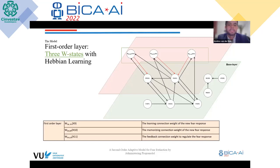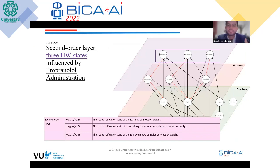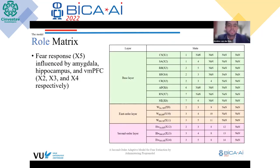The first-order layer contains three W-states, or omega states, that have the Hebbian learning combination function to facilitate learning and change the hippocampal and ventral medial prefrontal cortex states. The second-order layer activates learning — the first layer is responsible for learning, whereas the second layer activates it. Looking at the role matrix, the second-order layer is affected by the norepinephrine state (state 8), the first-order layer is activated by the second-order layer, and that leads to the modulation of the hippocampal and ventral medial prefrontal cortex states.